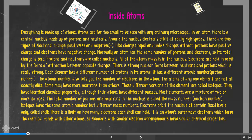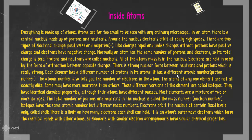Atoms are too small to be seen with an ordinary microscope. The central nucleus is made of protons and neutrons, and electrons orbit around the nucleus at really high speeds. Like charges repel and opposite charges attract. There are the same number of protons and electrons in an atom, so the overall charge is zero — positive plus negative equals zero. Protons and neutrons together are called nucleons, and almost all the atom's mass is in the nucleus.